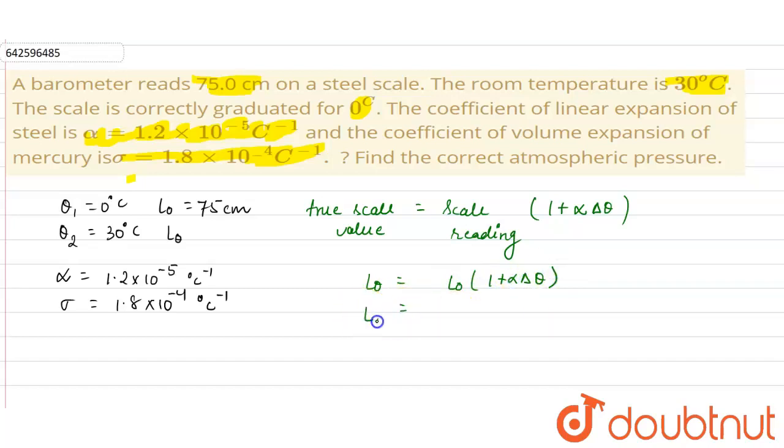So from here we can calculate the L theta as L0 given to us is 75, 1 plus alpha is 1.2 into 10 to the power minus 5 and delta theta is 30 degree Celsius.